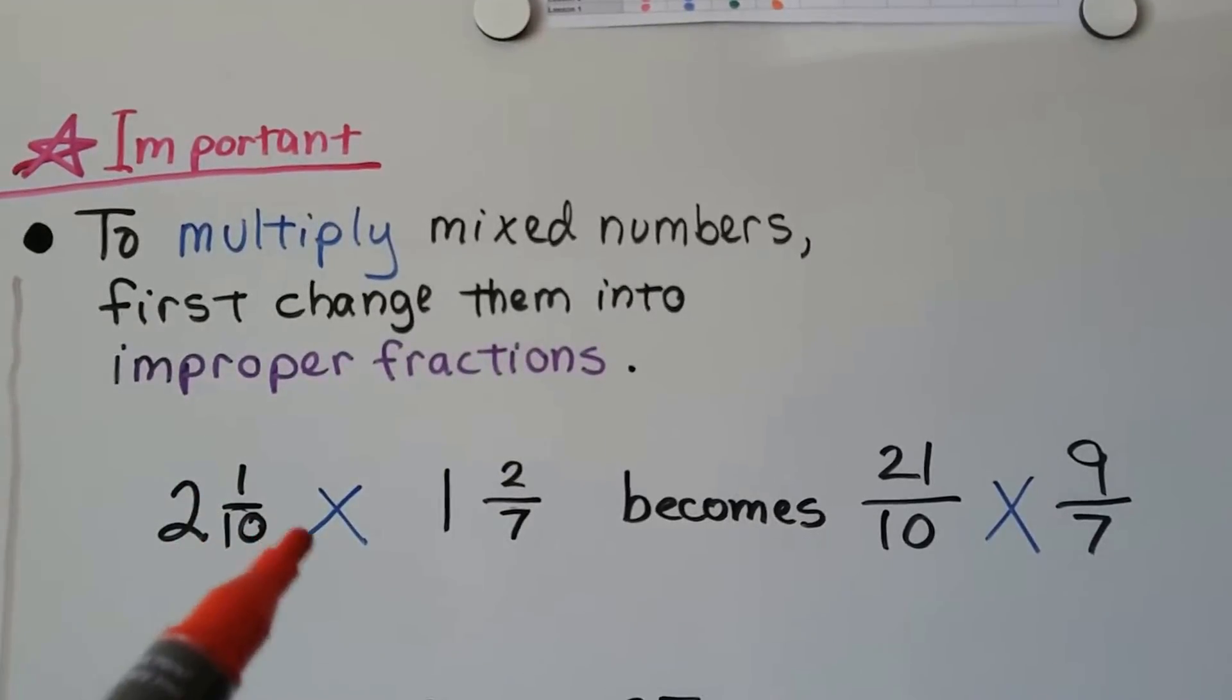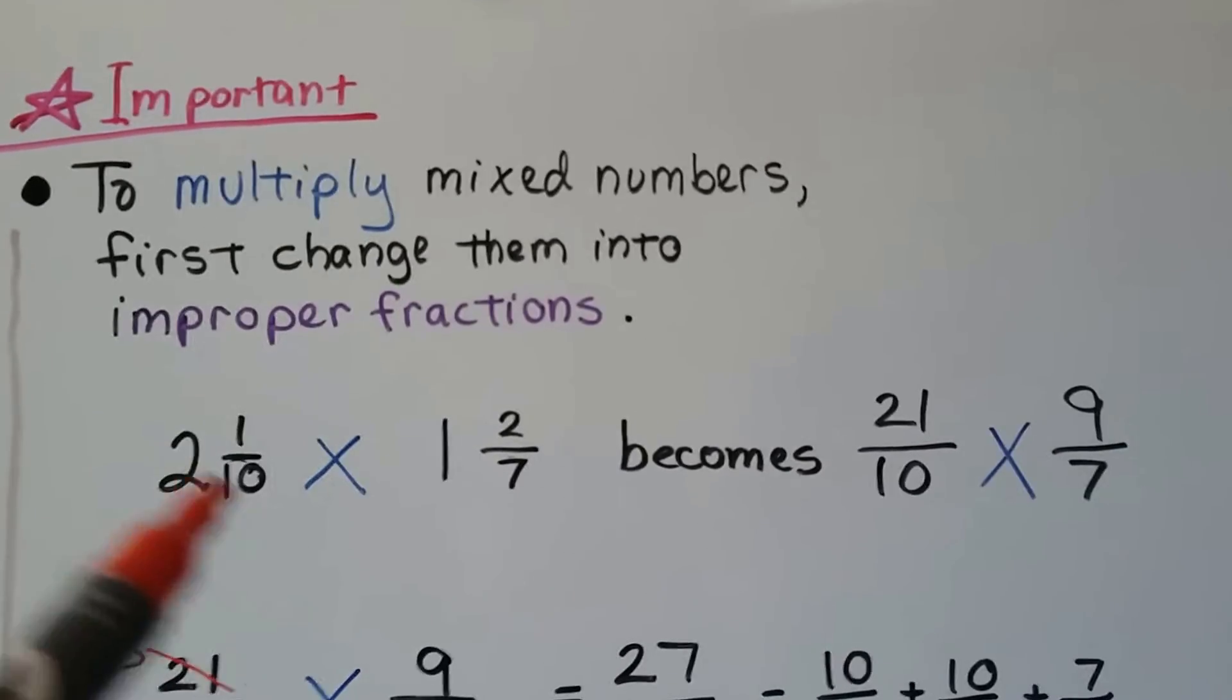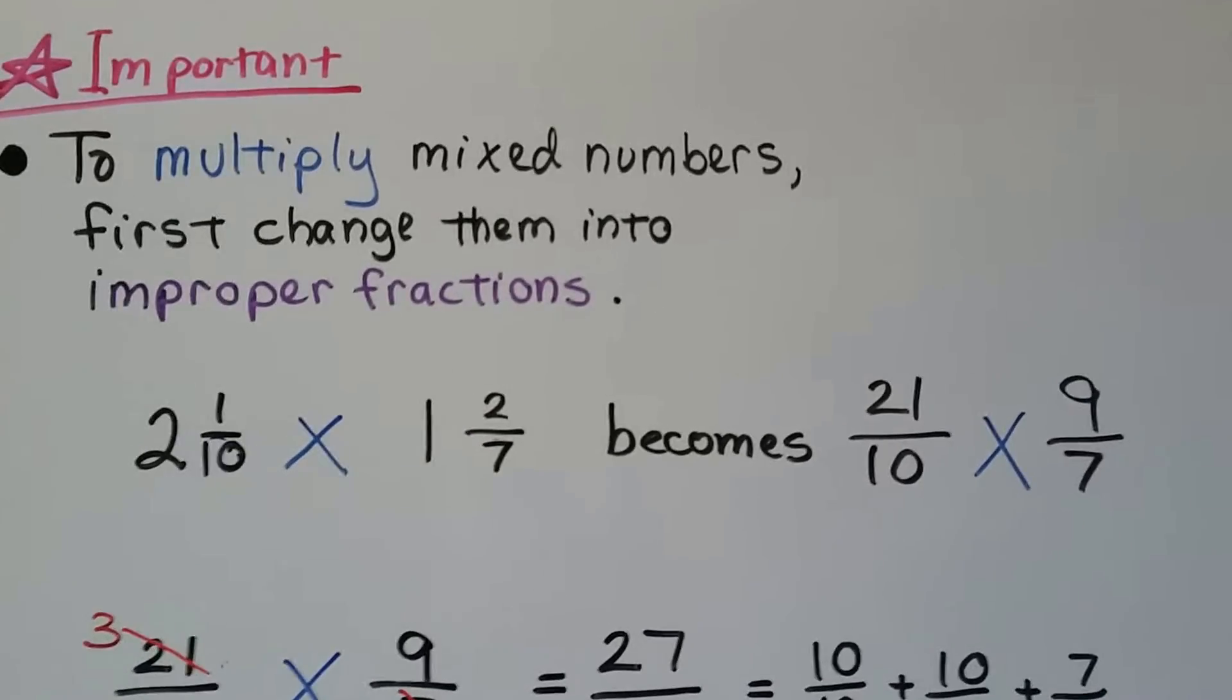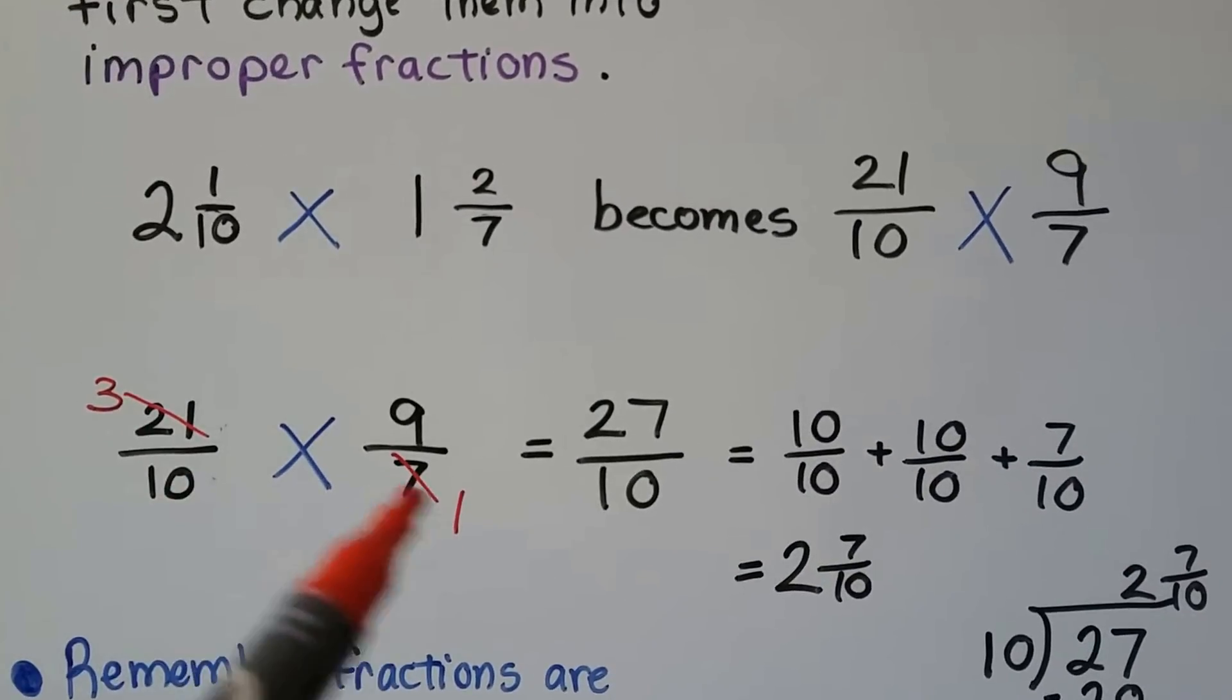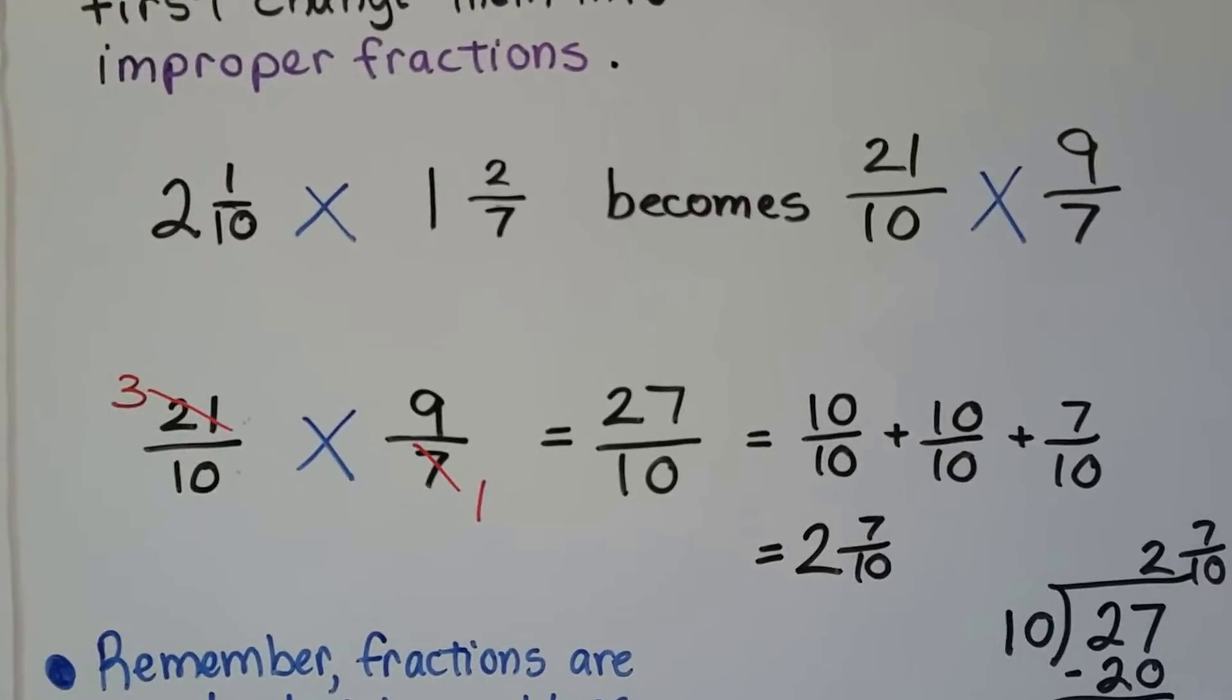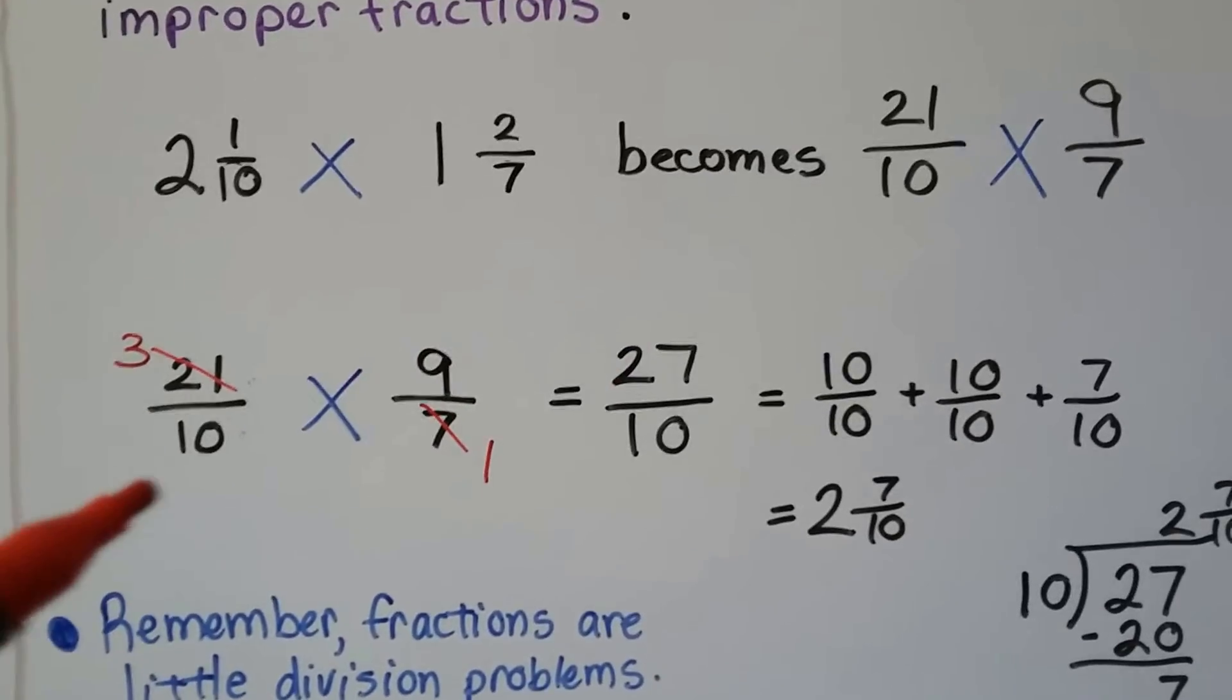So we have 2 and 1/10 times 1 and 2/7. We know we can change it to an improper fraction by multiplying the whole number to the denominator. 2 times 10 is 20 plus the 1 numerator. So we have 21/10. This is 1 times 7 is 7 plus 2 is 9/7. Now we can multiply it. We can do how many 7s are in a 7? There's 1. So we cross this out as a 1. And how many 7s are in 21? There's 3. So we cross the 21 out as a 3. And the 9 and the 10 don't have any factors in common. So we're just going to go with this.